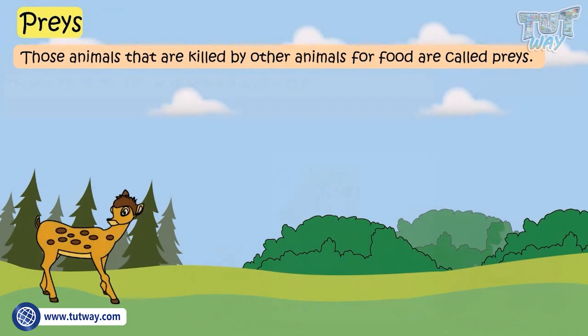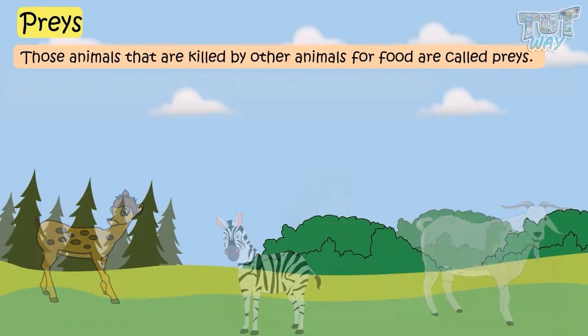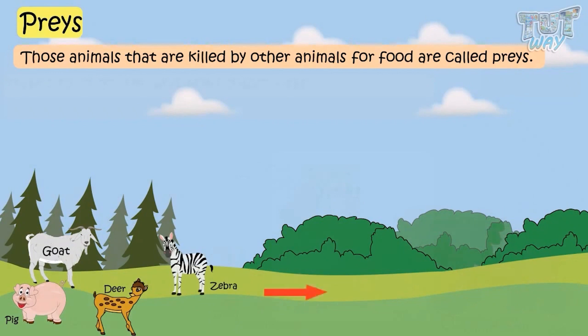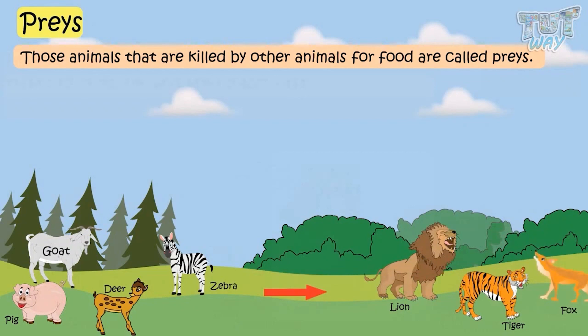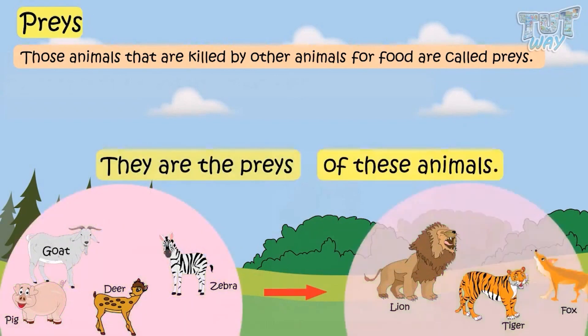Those animals that are killed by other animals for food are called preys. Goats, pig, deer, and zebra are killed by lion, tiger, and fox for their food. So they are preys of these animals.